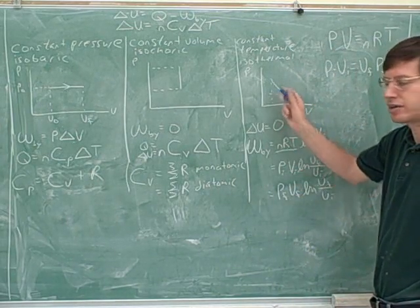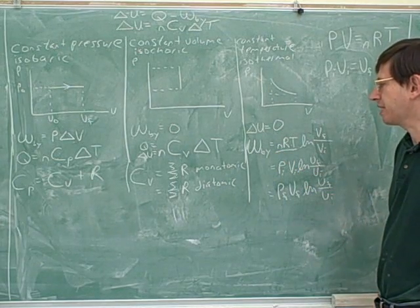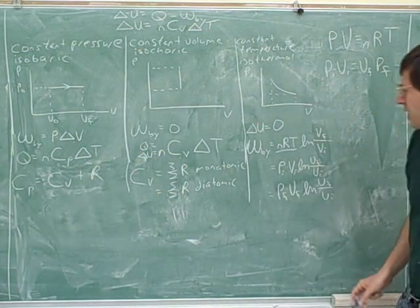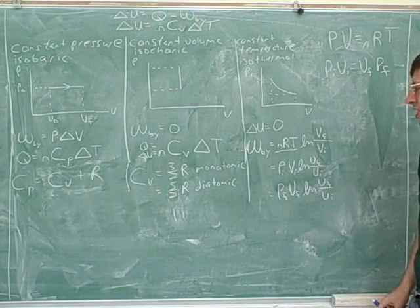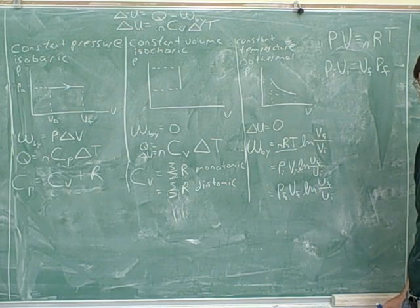That's how we can figure out, again, now the work, this area under the curve. And if we know this work, we should be able to figure out the heat that was exchanged, even though we don't have a special formula for heat, like we did over here. How, if I know the work, how would I figure out how much heat was exchanged?